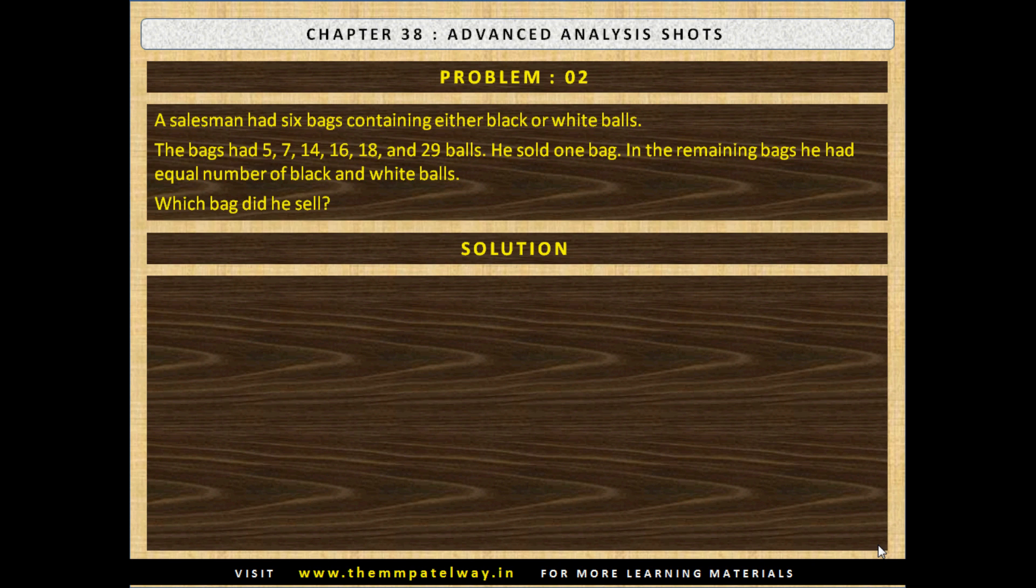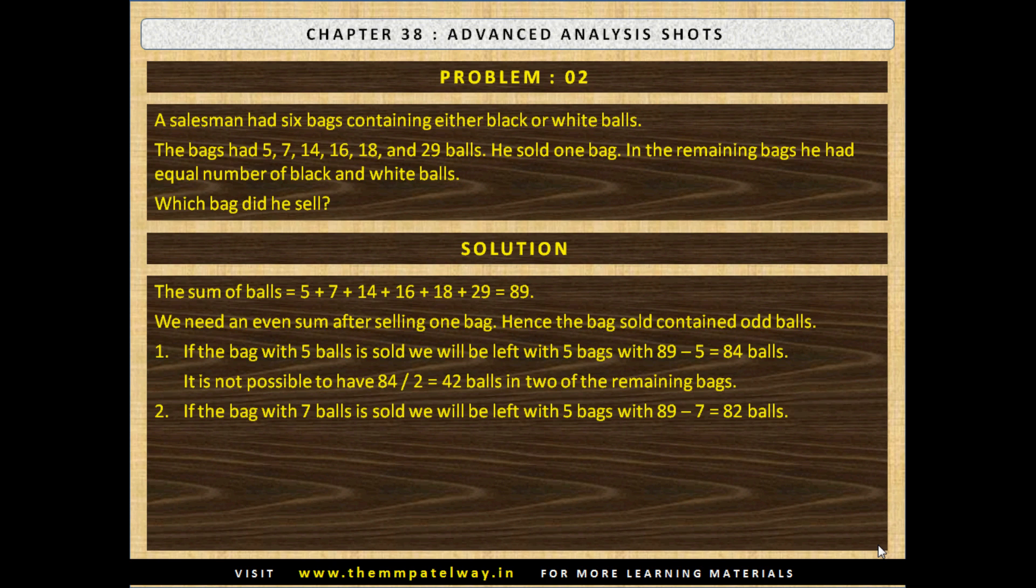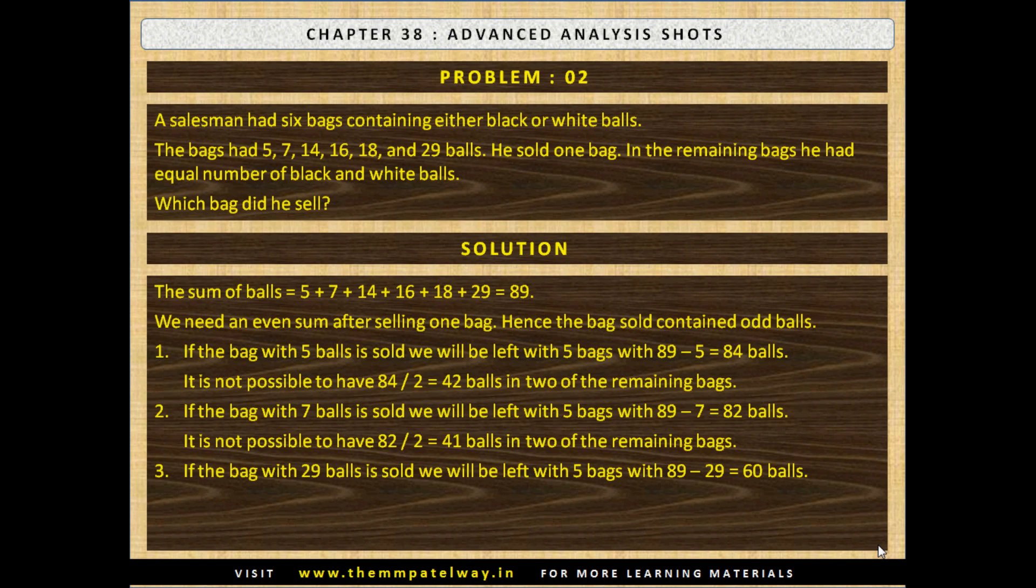Now let's see the solution. The sum of balls equals to 89. We need an even number after selling one bag. Hence the bags sold contain odd balls. If the bag with 5 balls is sold, we will be left with 5 bags with 89 minus 5 equals to 84 balls. It's not possible to have 84 divided by 2 equals to 42 balls in two of the remaining bags. Possibility number 2 is if the bag with 7 balls is sold, we will be left with 5 bags with 89 minus 7 equals to 82 balls. Again it is not possible to have 41 balls in two of the remaining bags. Next possibility is if the bag with 29 balls is sold, we will be left with 5 bags with 89 minus 29 equals to 60 balls. It is possible to have 30 balls in two of the remaining bags, that is 14 plus 16. Therefore the bag with 29 balls is sold.